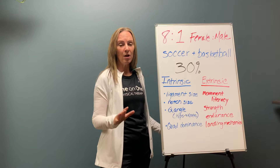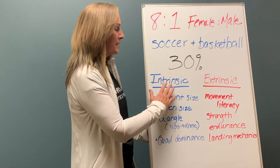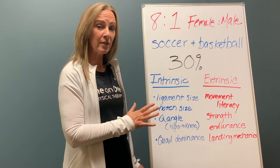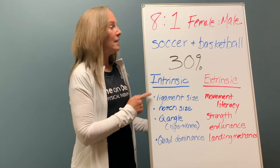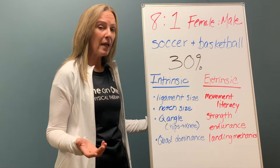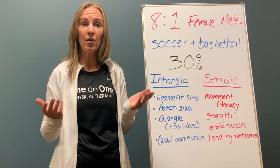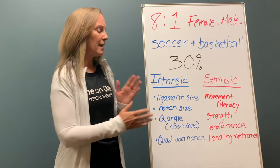The physical, emotional, and psychological damage to these athletes is astronomical, so we need to reduce the risk. Injuries occur due to intrinsic and extrinsic factors. Intrinsic factors are built-in and cannot be changed — these include ligament size (smaller in females), notch size (smaller in females, making impingement more likely), the Q angle (wider in females, putting more stress on the knee and ACL), and quad dominance.